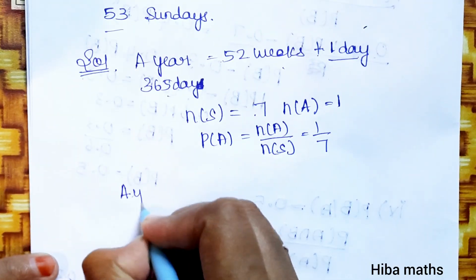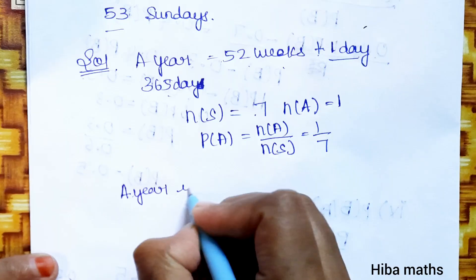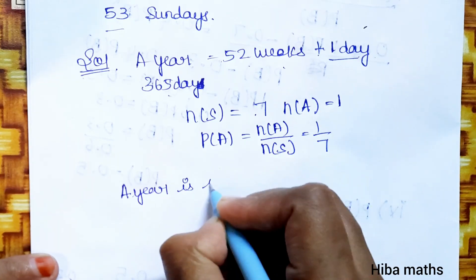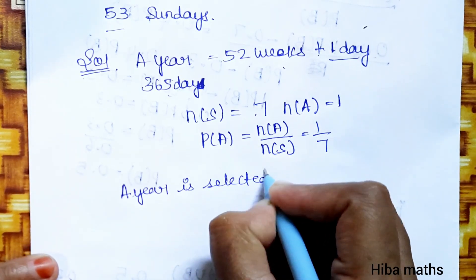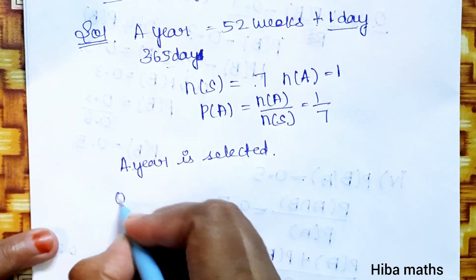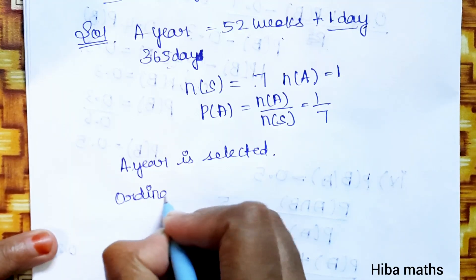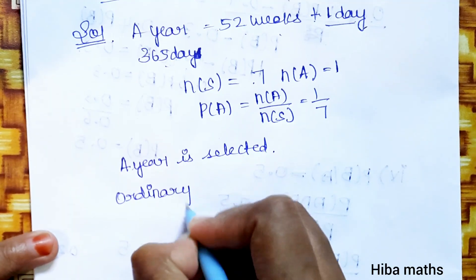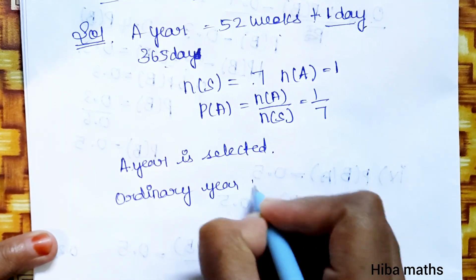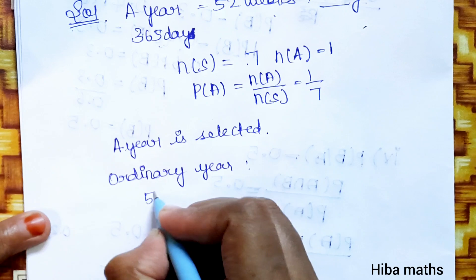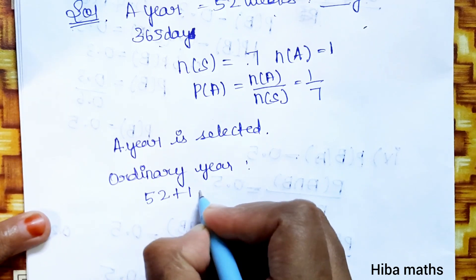So let's look at n of A for Sunday. One year is selected. An ordinary year is 52 weeks plus 1 day.